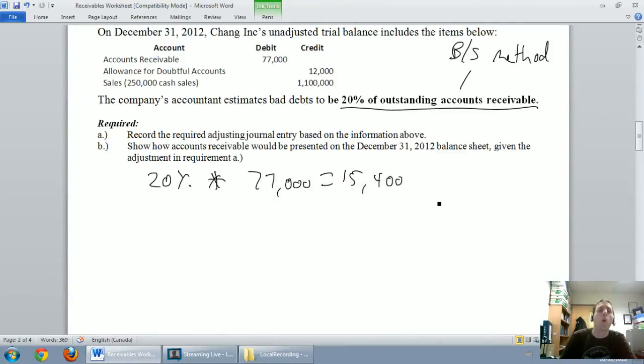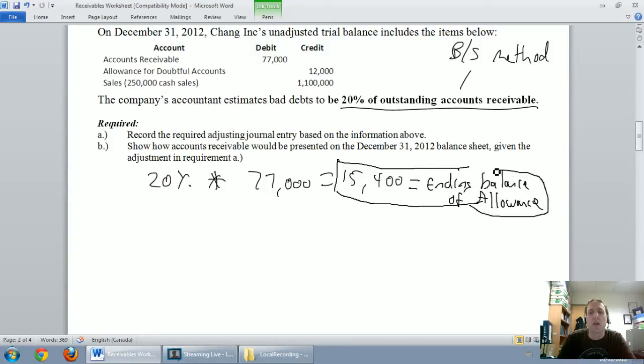Now we're doing the balance sheet method. When I take a percentage of a receivable, and it could be a list of receivables, but when I total up that percentage of my receivables, I'm not calculating my bad debt expense. I'm calculating the ending balance of my allowance. So this is the ending balance of my allowance for doubtful accounts, and it's a credit. Maybe I'll put that in brackets. The allowance is a contra-asset account. Its natural state of existence is it's a credit account. So I've said my ending balance of my allowance has got to be $15,400.